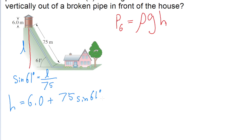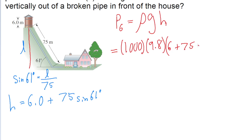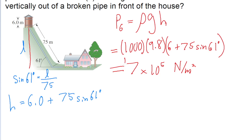So let's apply that to the formula for the gauge pressure. The gauge pressure is equal to the density of the fluid, which is the density of water — 1,000 kilograms per cubic meter — multiplied by the gravitational acceleration, 9.8 meters per second squared, then multiplied by the whole formula we just found for the depth: 6 meters plus 75 meters times the sine of 61 degrees. If we put all of that into a calculator, we find a gauge pressure of about 7 times 10 to the power of 5 newtons per meter squared. And so that is the answer to part A.